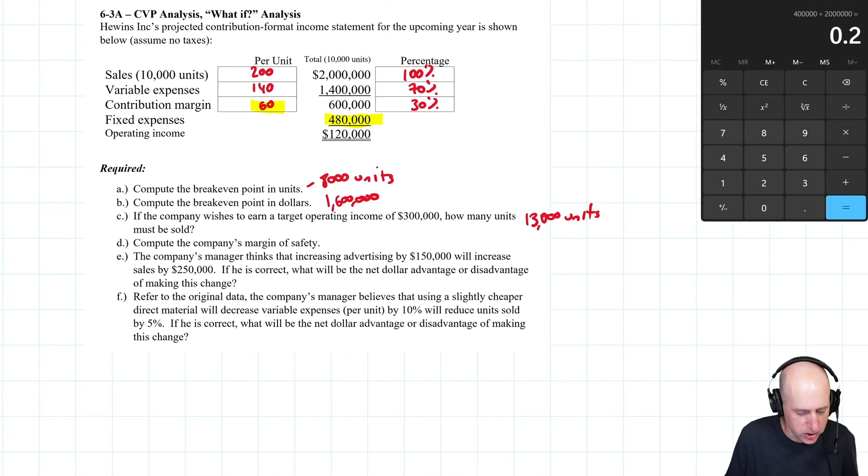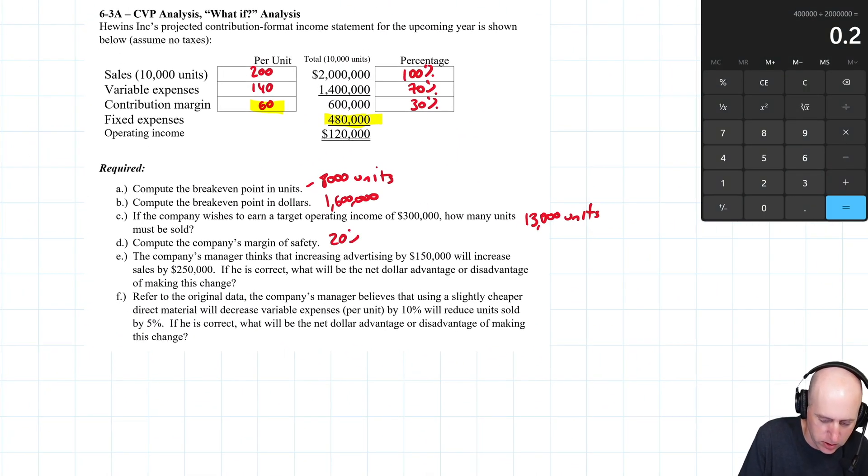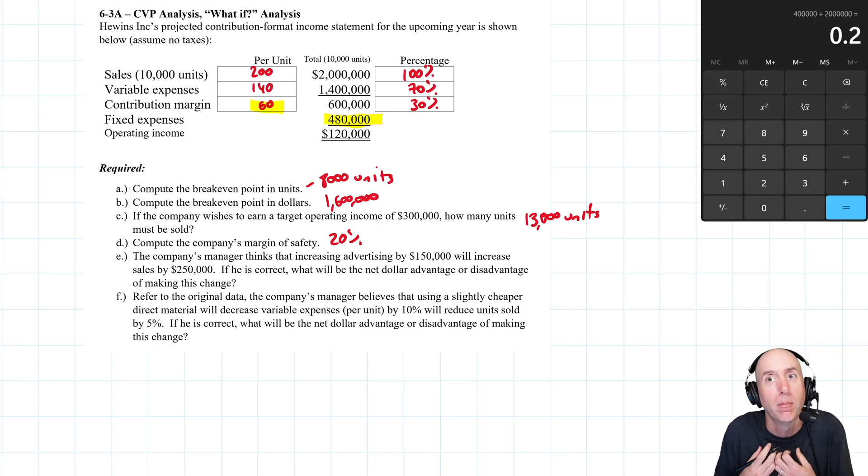What does that mean? It's a percentage. The margin of safety is 20%. It means if I miss my sales target by 20%, if I'm 20% worse than I projected, I'm still okay. I'm still going to break even. That's how much wiggle room I have to be wrong. Our projections can be wrong by 20%, and we'll still be breaking even.